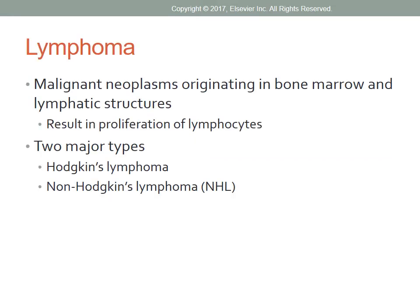Lymphomas are malignant neoplasms — abnormal cells that divide uncontrollably and destroy body tissues. They originate in the bone marrow and lymphatic structures and result in proliferation of lymphocytes. There are two types of lymphomas: Hodgkin's lymphoma and non-Hodgkin's lymphoma.